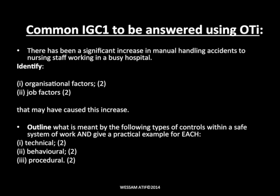A NEBOSH exam question stated directly: 'There has been a significant increase in manual handling accidents to nursing staff in a hospital — identify what organizational factors and job factors may cause this increase.' This is very clear — you apply the formula and elaborate on those factors. Another question asks you to 'outline what is meant by the following types of controls and give an example of each,' using terms like technical factors, behavioral factors, and procedural factors — slightly different labels, but the same OTI tool applies.